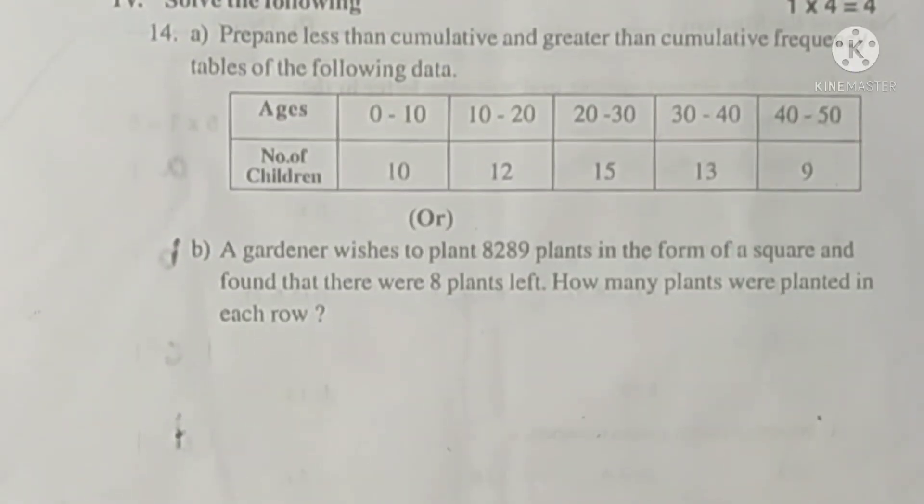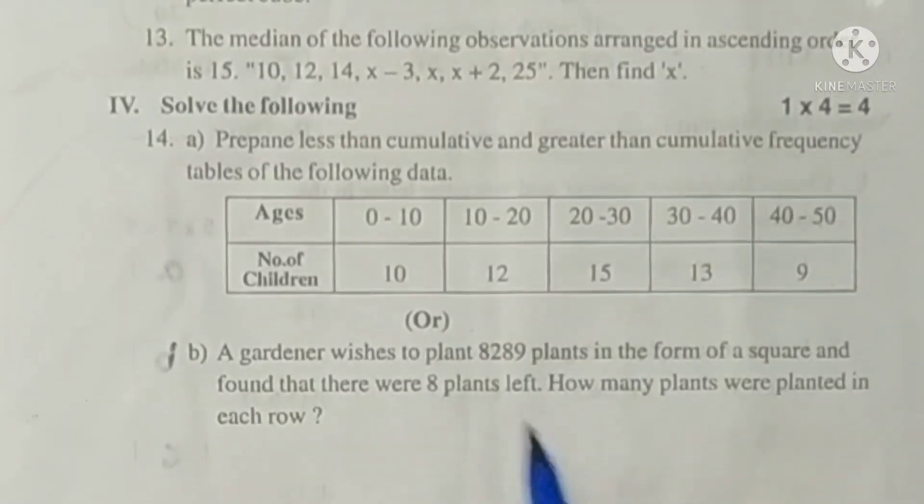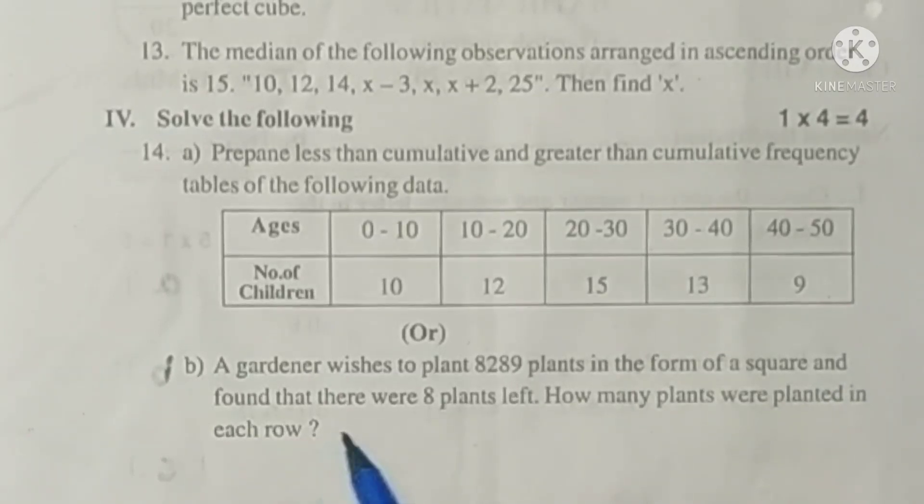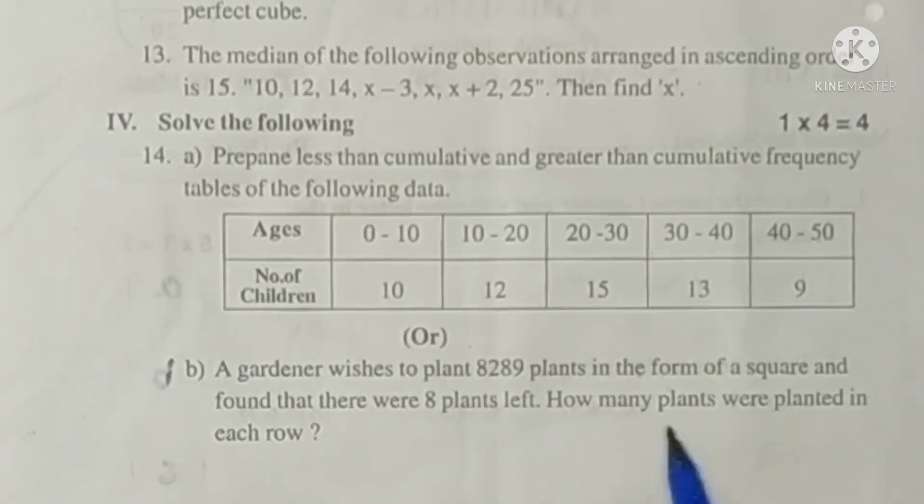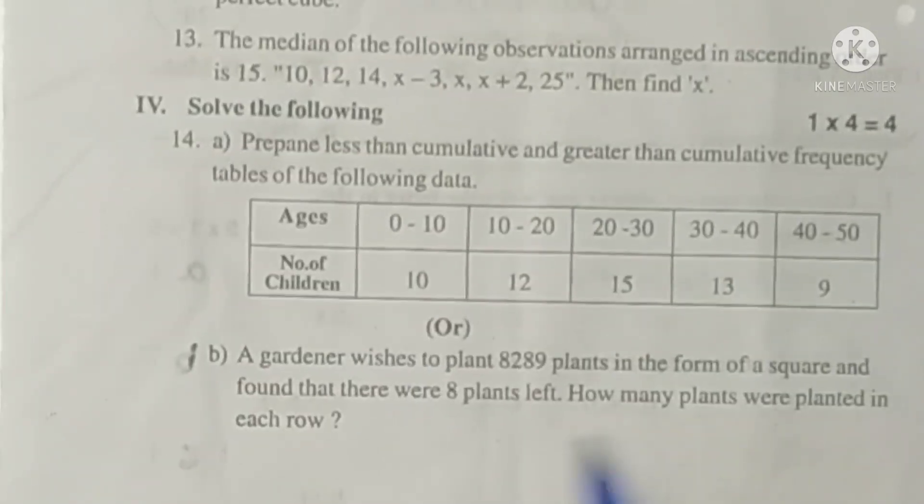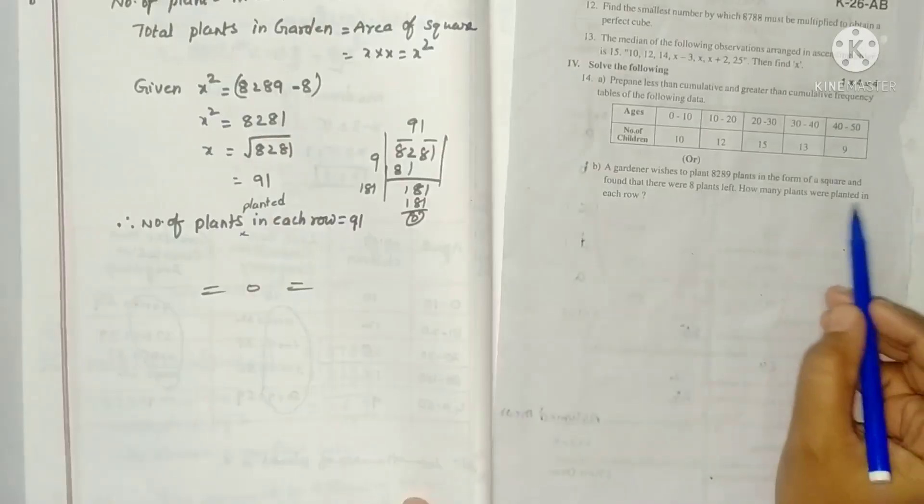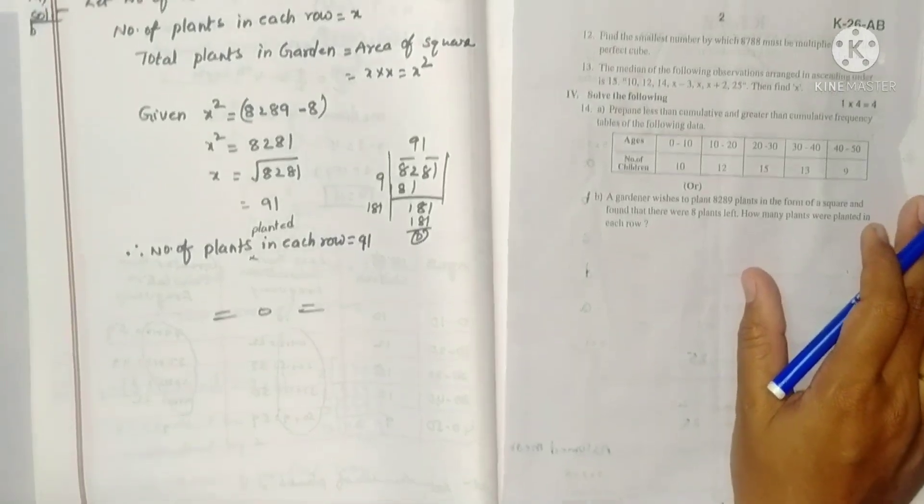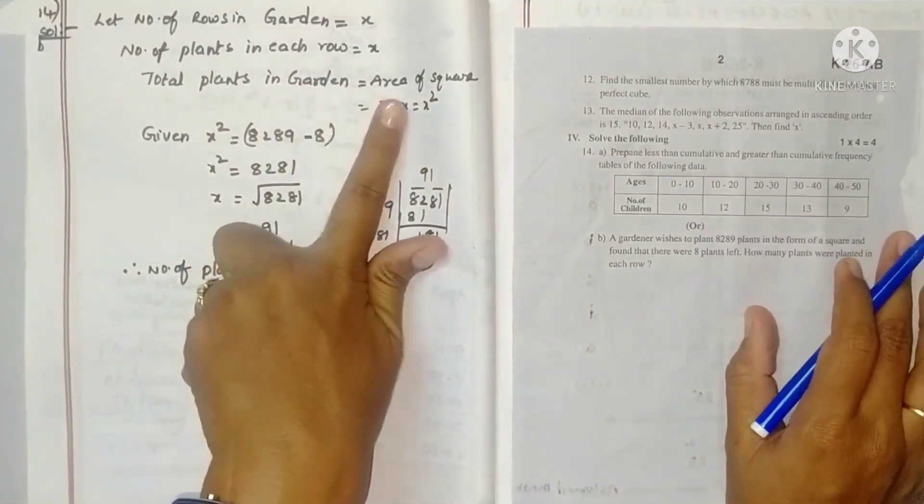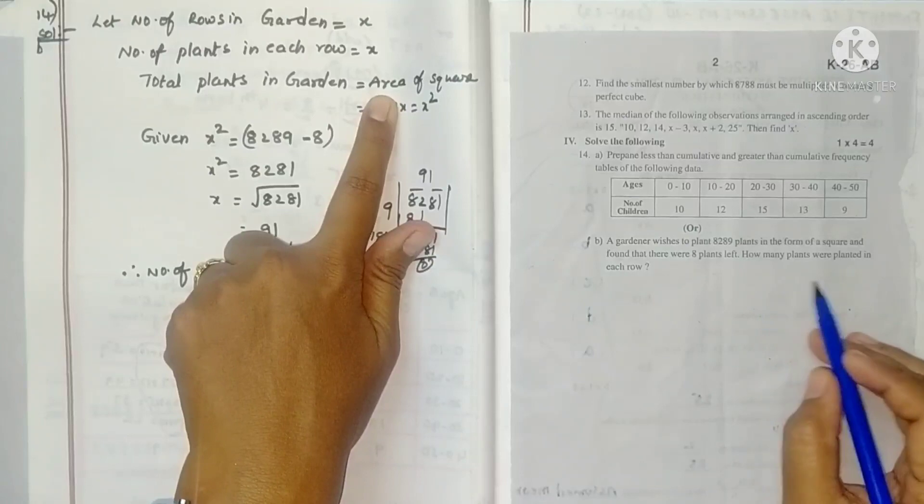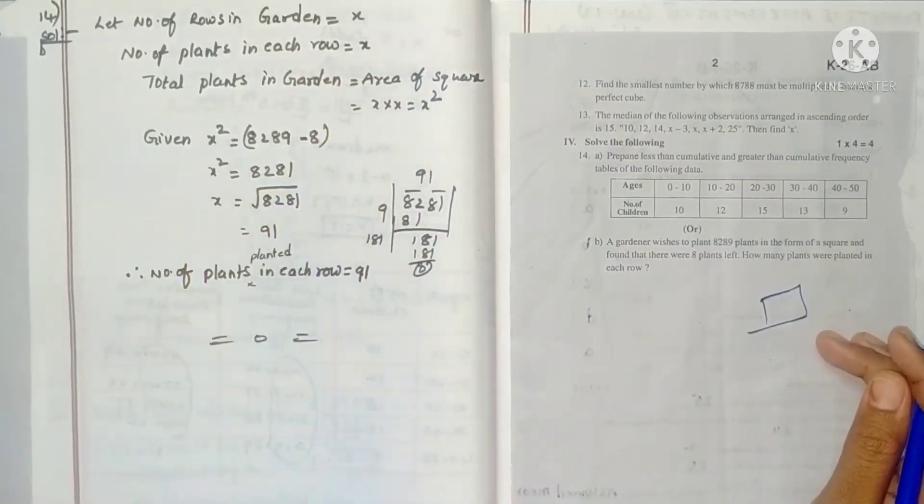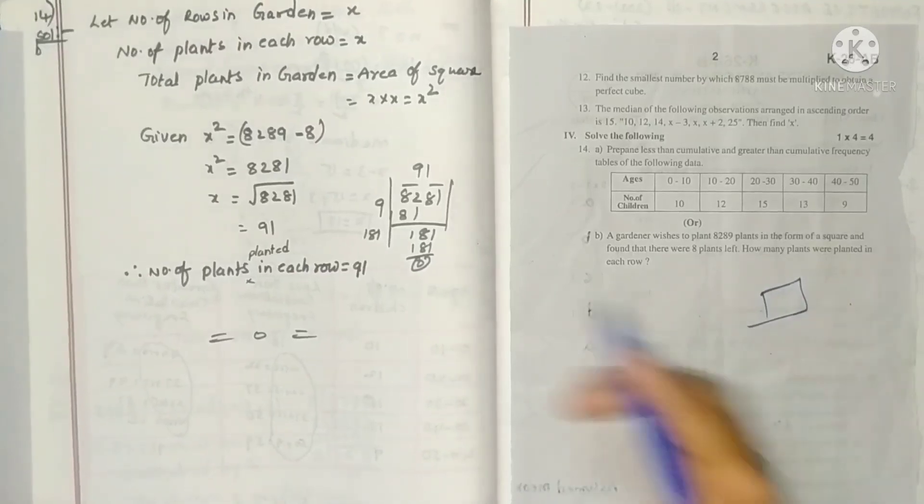14B. A gardener wishes to plant 8289 plants in the form of a square and found that there were 8 plants left. How many plants were planted in each row? They are asking how many plants were planted in each row. Let number of plants in each row be X. They are telling it is in the form of a square, so number of rows in the garden is also X.